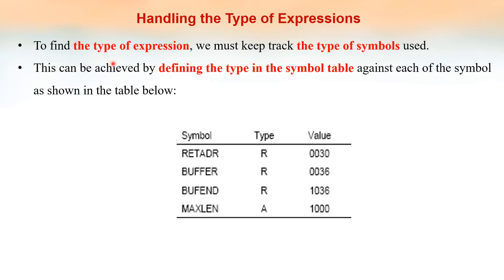Handling the type of expressions — to find the type of an expression, we must keep track of the type of the symbols used in that expression. To keep track of the type, we can include it as a column in the symbol table. The symbol table contains symbols and values; we can add one more column for the type of the symbol. For example, READER is a relative term, BUFFER is a relative term, BUFFEND is a relative term, and MAXLIAN is an absolute term. From this topic, questions can be asked where we are given some expressions and must classify whether they are absolute, relative, or neither absolute nor relative.